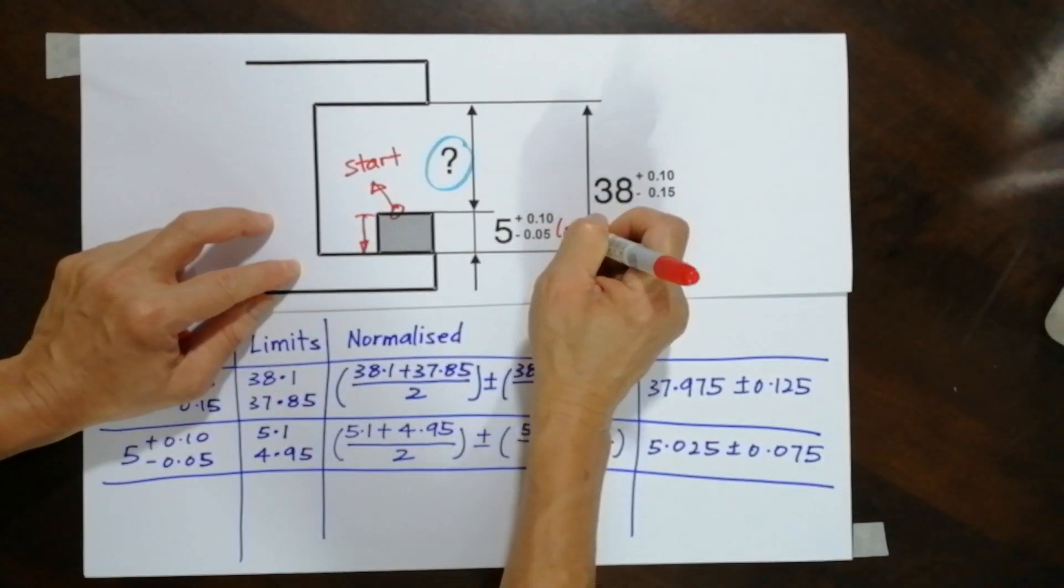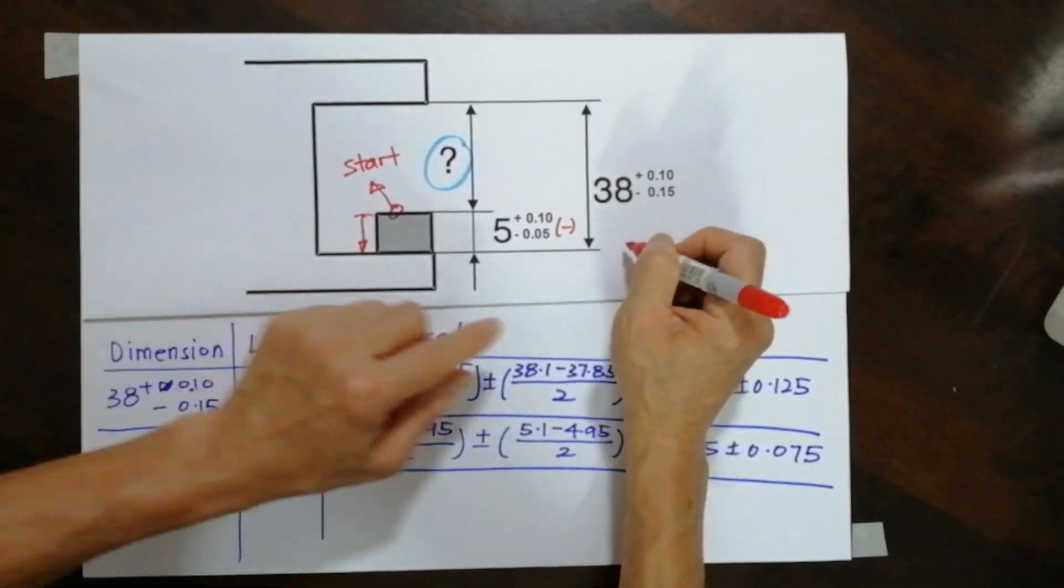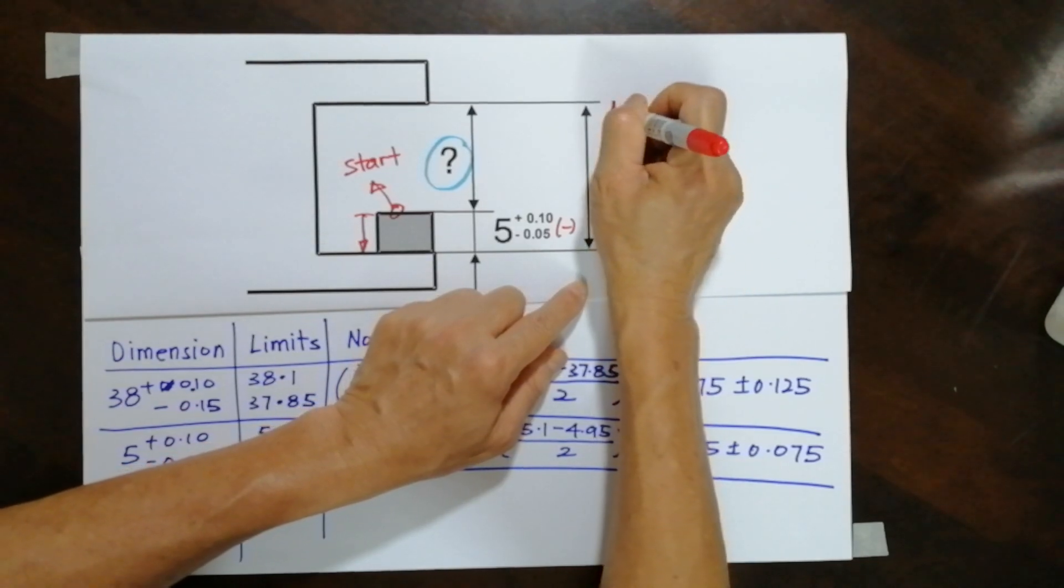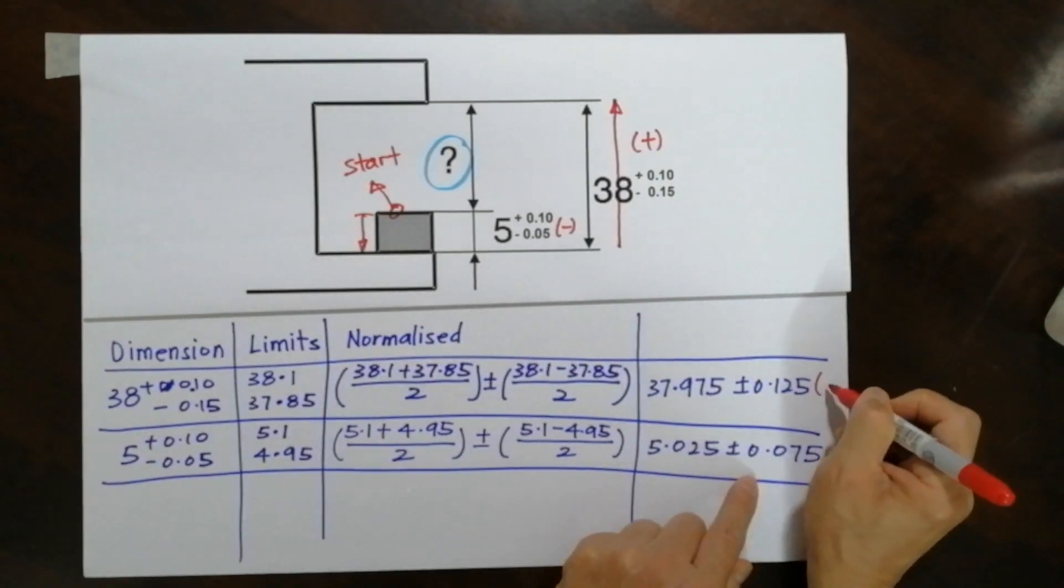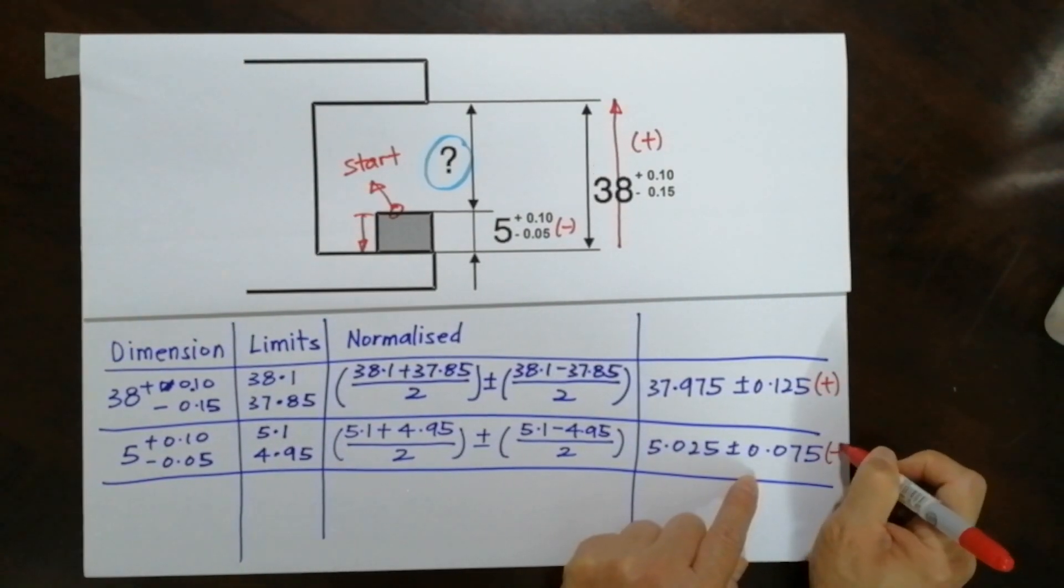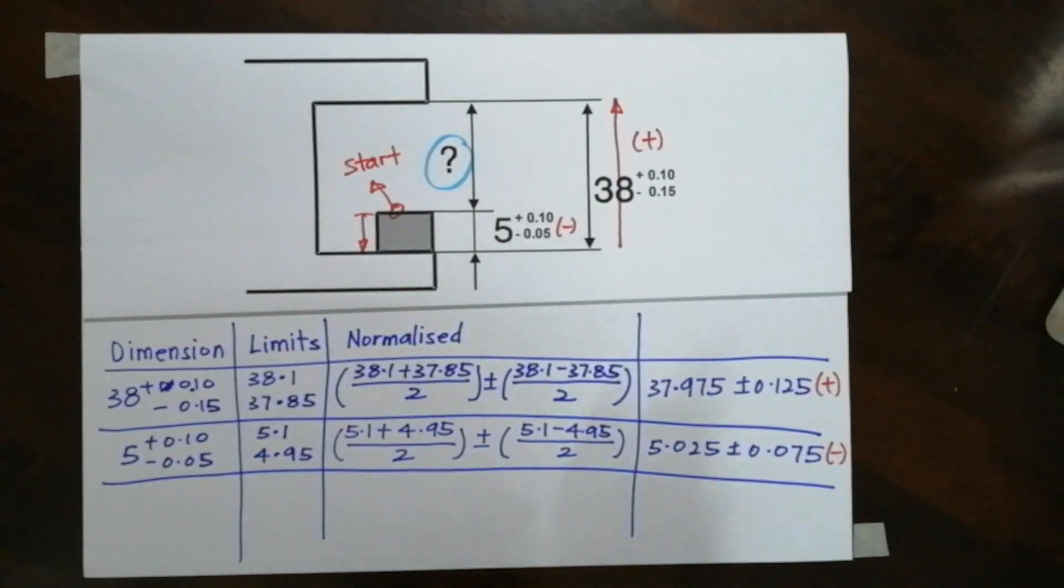And then this is going up, so this dimension is positive. In other words, I will say this is positive and this is negative.